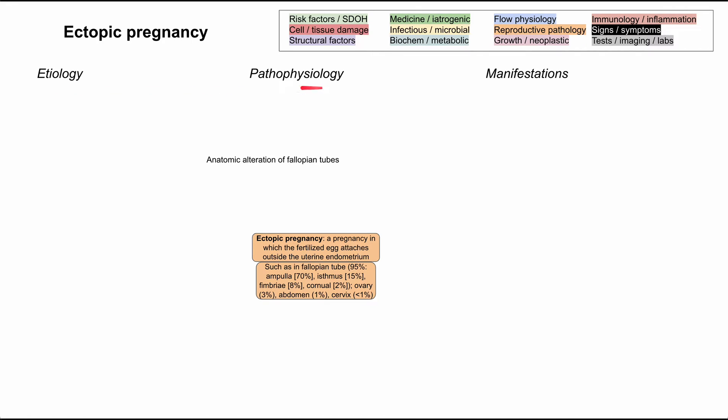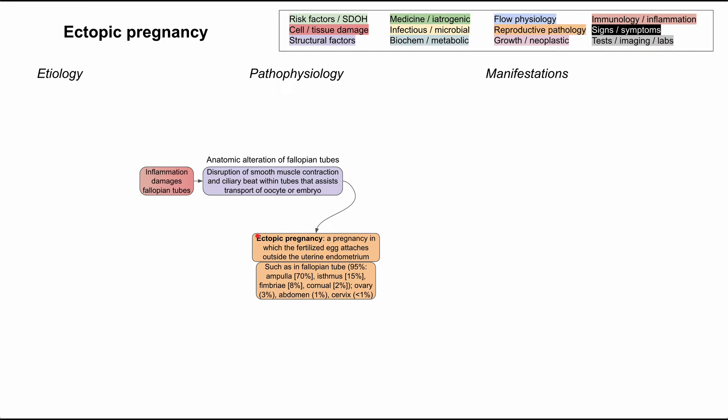Now let's work our way back and talk about the etiology and pathophysiology of ectopic pregnancies. The majority of cases occur due to anatomic alteration of the fallopian tubes, and that usually involves inflammation. Inflammation causes anatomic alteration by damaging the fallopian tubes in a couple of ways. First, inflammation disrupts the smooth muscle contractions and the ciliary beat of the fallopian tubes. These normally push the embryo or oocytes through the tubes from the ovary into the uterus. When this coordinated motion is disrupted, the embryo or oocyte can stall in the fallopian tubes and be prevented from reaching the uterus — and that by itself causes ectopic pregnancy.